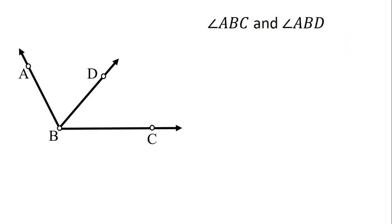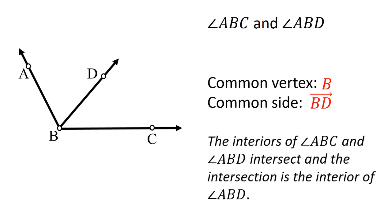How about angle ABC and angle ABD? So ang common vertex nila is B. Common side, RayBD. Pero yung interior nila nag-intersect. At yun ay yung angle ABD. So yung angle ABD nasa loob ng angle ABC. So hindi yun pwede.